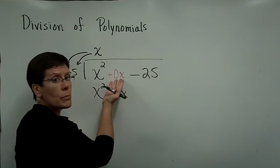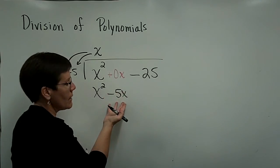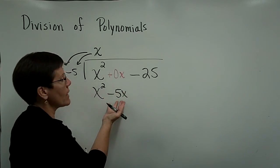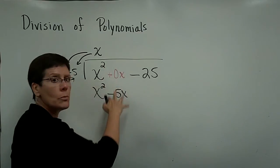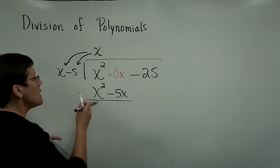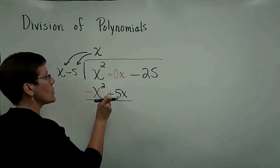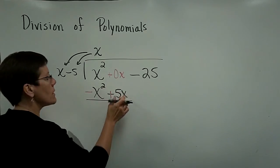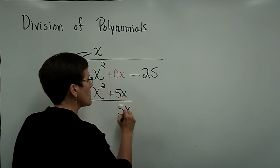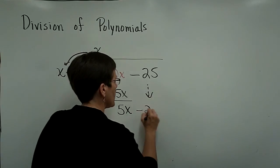If this minus 25 had been sitting right here, it's not a like term with the minus 5x. So I needed a little bit of room here to put that term in place. Now I'll subtract. So I'll change those signs. 0x and 5x adds to be 5x. And I bring down the minus 25.